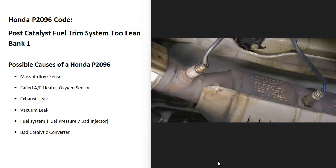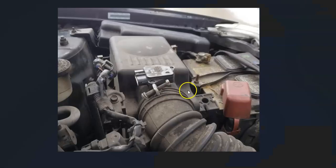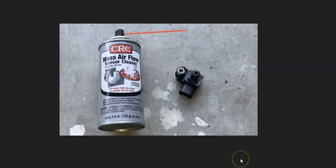This code is a little problematic since so many different things can cause it. But the first thing to check is the mass airflow sensor, or MAF sensor, located up around the air intake box. This sensor measures all the air going into the engine, and the onboard computer uses this information to adjust the air-fuel ratio going into the cylinders. If this sensor goes bad or gets dirty, it can throw off the air reading and cause issues.